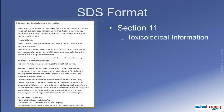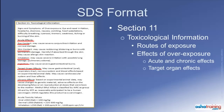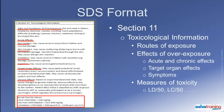Section 11, titled Toxicological Information, lists the known routes of exposure the chemical can use to get into your system, including inhalation, ingestion, and skin and eye contact. Also listed are the effects of exposure to the product, which include acute and chronic effects, applicable target organ effects, and a description of symptoms associated with overexposure. There will also be specific measures of toxicity where applicable, such as LD50 — the estimated amount of a substance expected to kill half of exposed test animals in a single dose. And if a chemical is listed as an actual or potential carcinogen, that information will be provided in this section too.